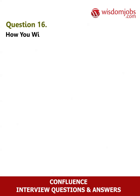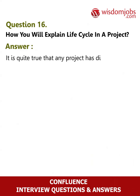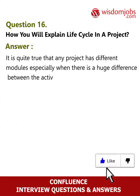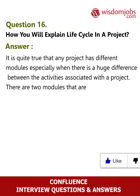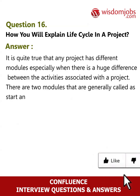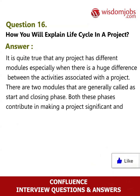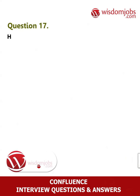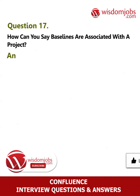Question 16: How will you explain life cycle in a project? Answer: It is quite true that any project has different modules, especially when there is a huge difference between the activities associated with a project. There are two modules that are generally called the start and closing phase. Both these phases contribute in making a project significant and are jointly considered as life cycle.